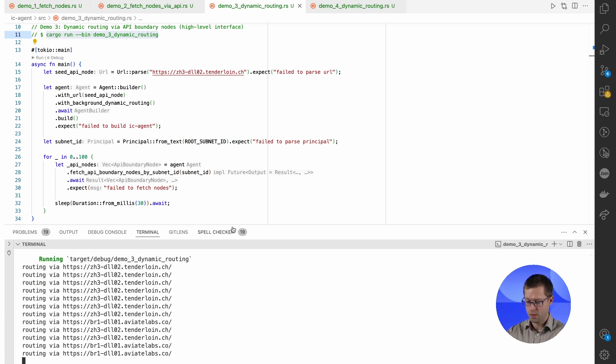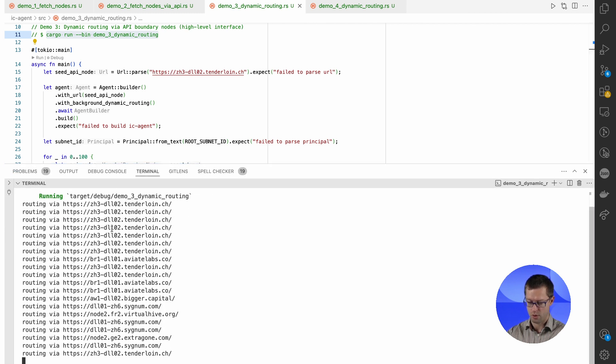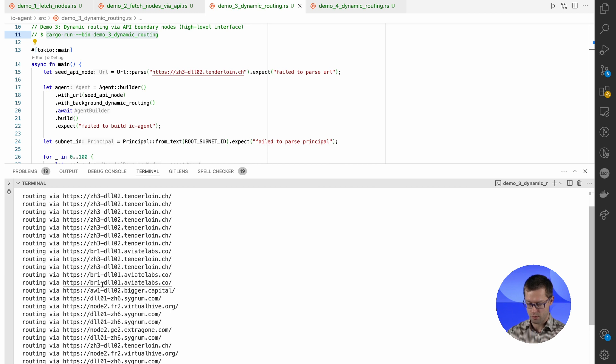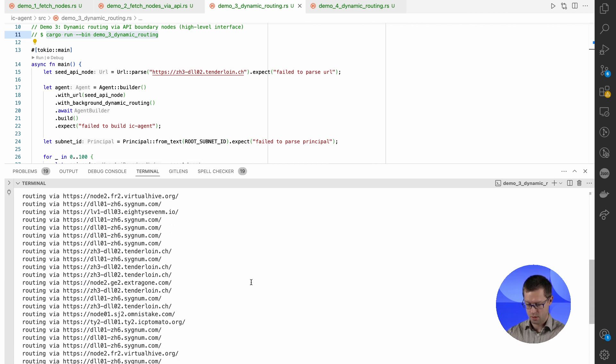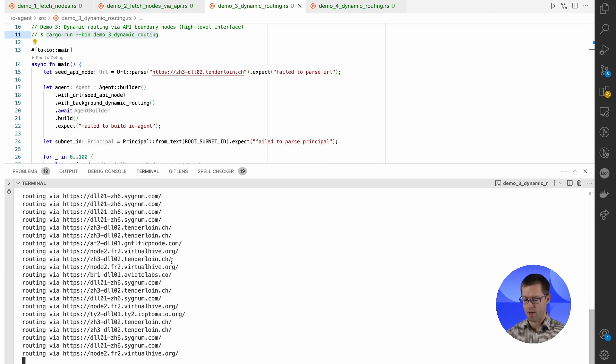As you can see, now requests are routed through different URLs. And those URLs are chosen randomly, but with some weight distribution according to the latencies. As you can see, we can route requests through many API boundary nodes now.